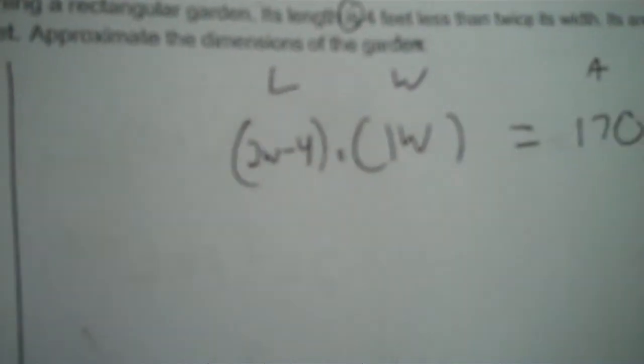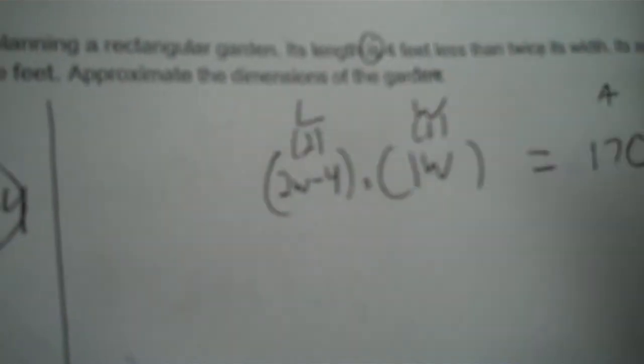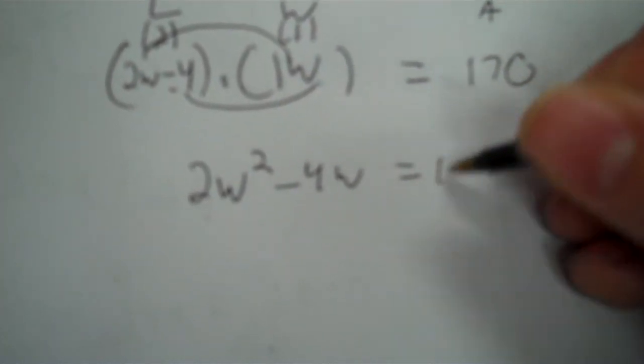And over here we just write W. Now multiply that out. This has two terms, this has one term — so again it's a two-by-one multiplication, giving two products: 2W times 1W, and negative 4 times 1W. So it's going to be 2W squared, and this is negative 4W. Those are not like terms, so we don't combine them.